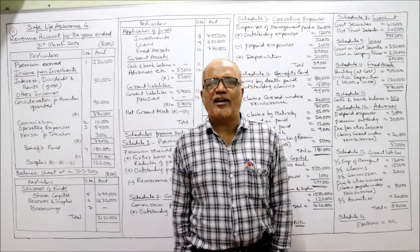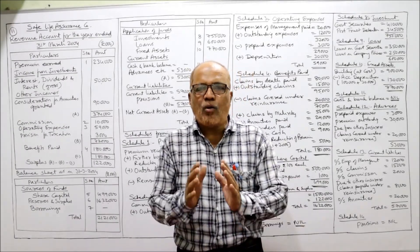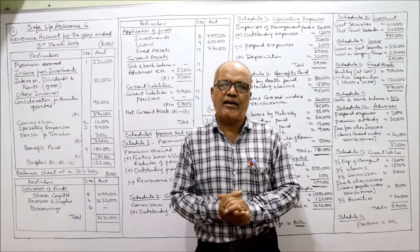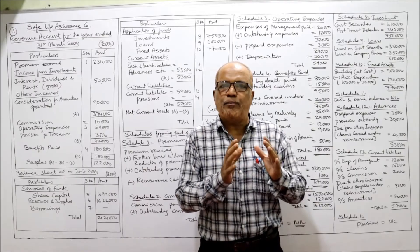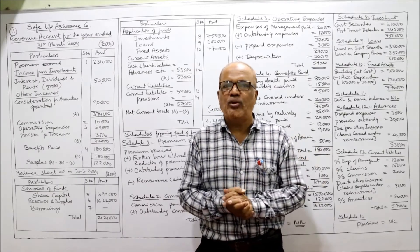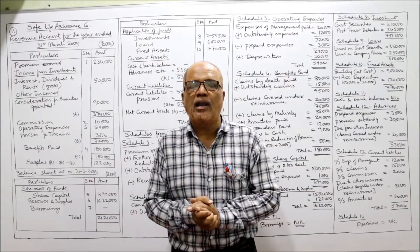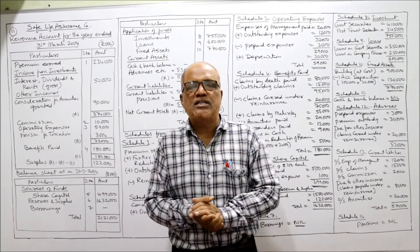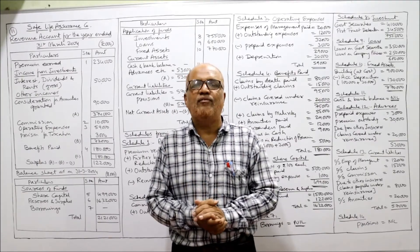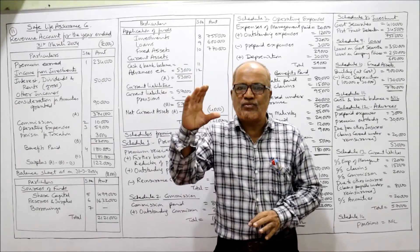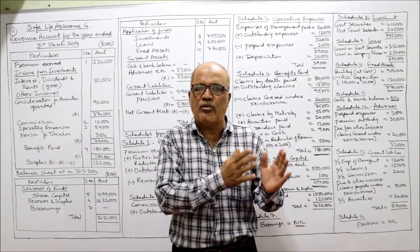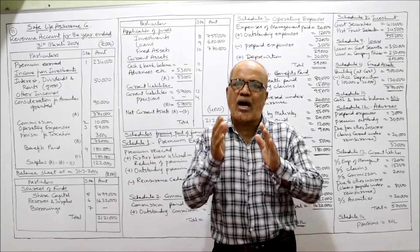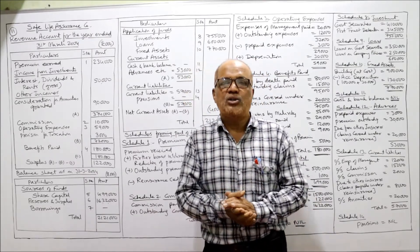Hello viewers, welcome to my channel. I'm Harsham Ali Khan. I'm continuing with the 11th problem on life insurance company accounts. So far, 10 problems have been completed in previous videos regarding how to make the final accounts of life insurance companies — the revenue account and balance sheet — along with all 14 schedules. If you join now you may not be able to understand, so I suggest you watch from the beginning.